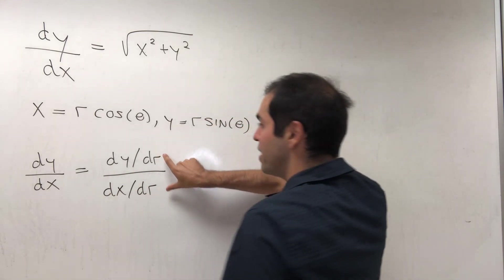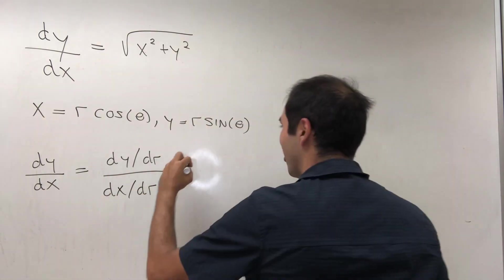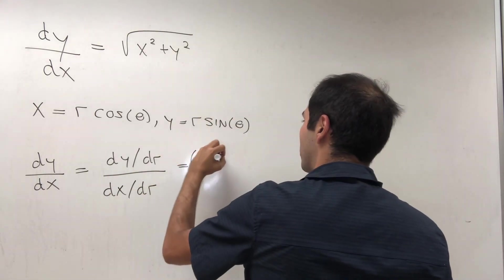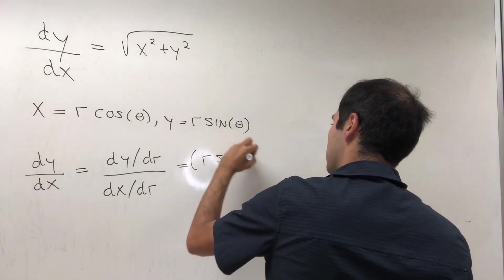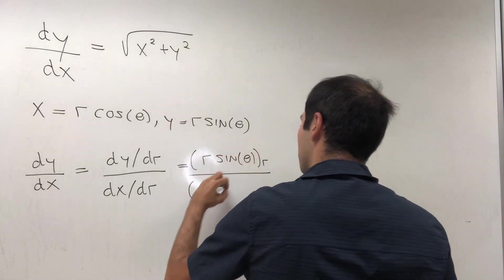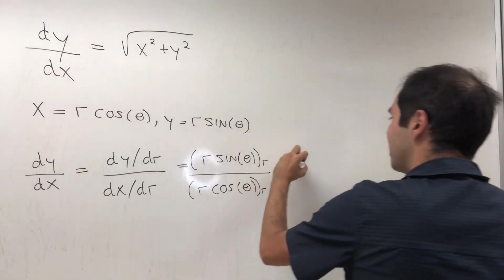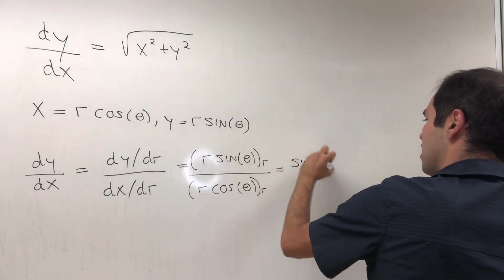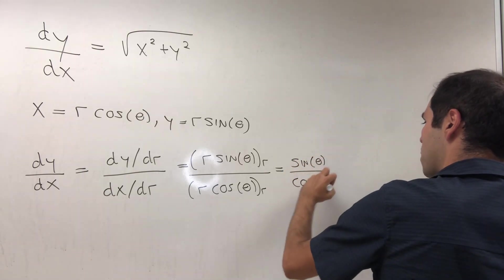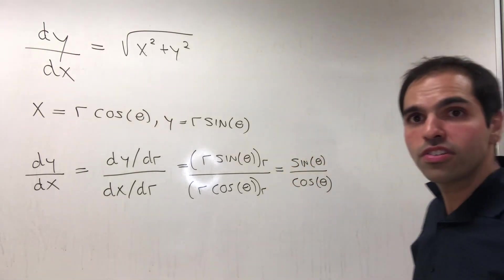By dividing both sides by dr, we get r sin(θ) with respect to r over r cos(θ) with respect to r. This is sin(θ) over cos(θ), which is just tan(θ).